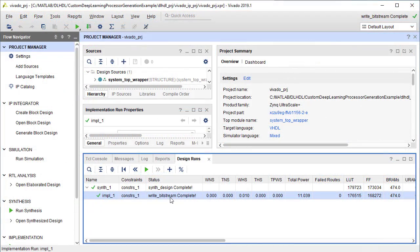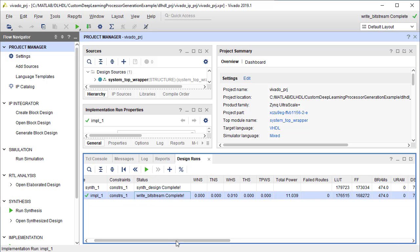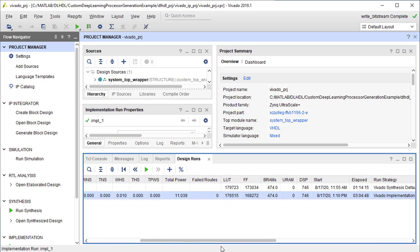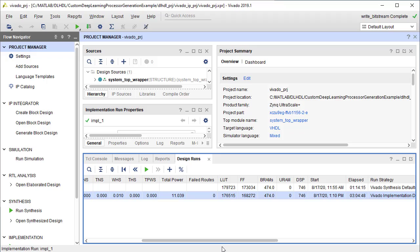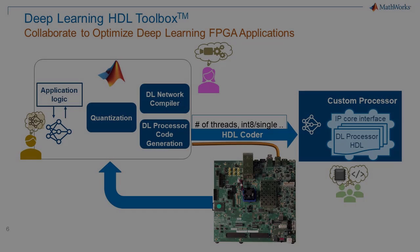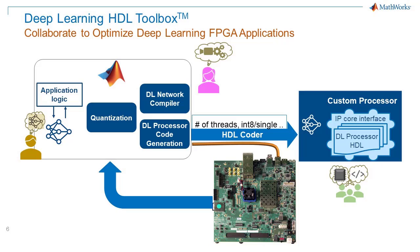We can take a look at the implementation results here in Vivado. We're meeting timing at the 220 MHz target with the resource usage as shown. This shows how powerful it can be to collaborate between the design of the deep learning network and the implementation of the deep learning processor, and how easy it is to do right in MATLAB.